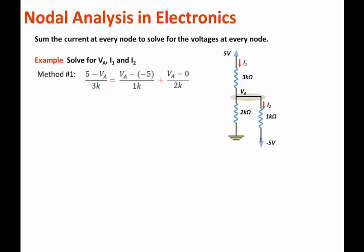We can cancel the 1K. It is a common denominator. We can also multiply by 6 because that is the common denominator. Then, the left side of the equation becomes 10 - 2VA. And the right hand side of the equation becomes 6VA + 30 + 3VA. Now we can group the VA terms at the left side of the equation and put the numerical value at the right side of the equation. Then, we have -11VA = 20, or VA = -20/11 volts.